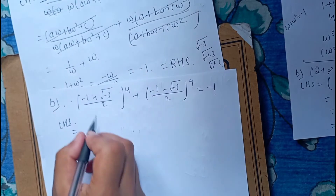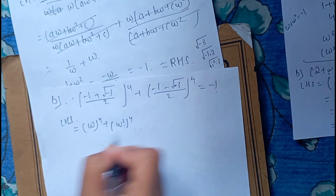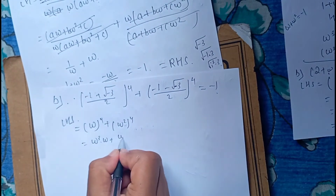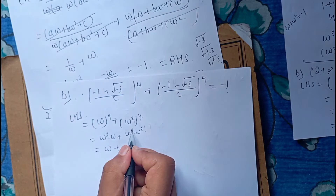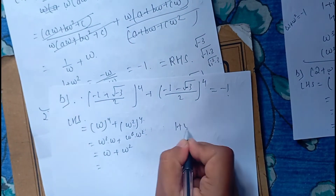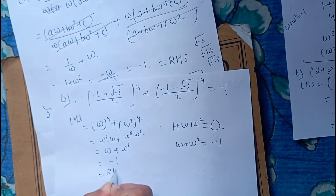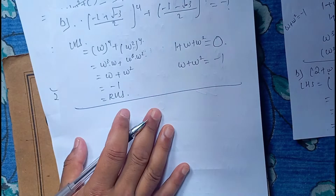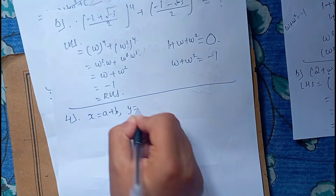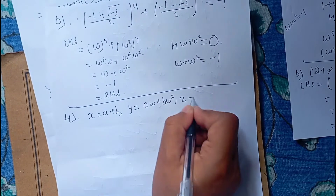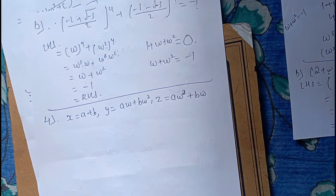The LHS is going to be solved. We are going to solve using omega properties: omega plus omega squared plus omega cubed, where omega plus omega squared equals minus 1. We have x equal to a plus b, y equal to a·omega plus b·omega squared, z equal to a·omega squared plus b·omega.